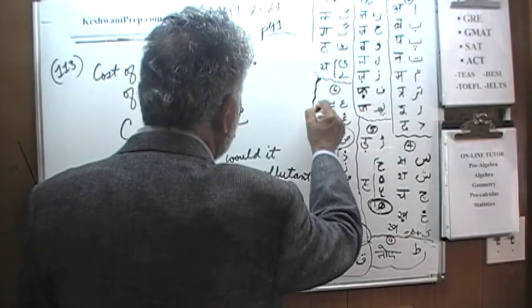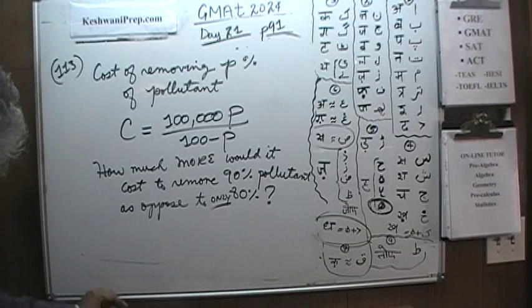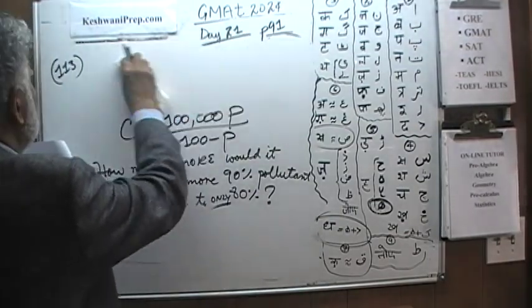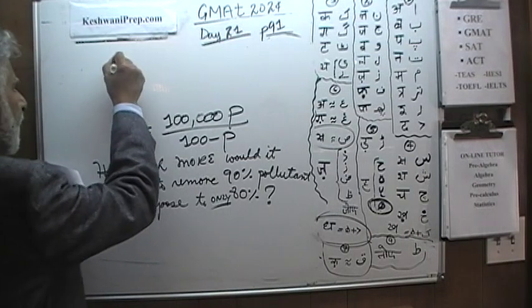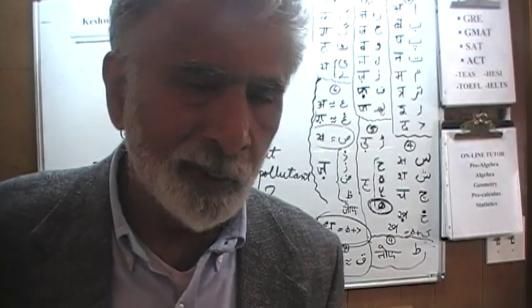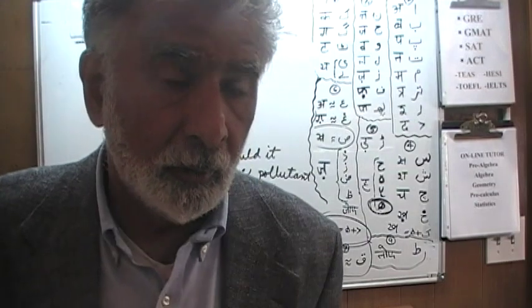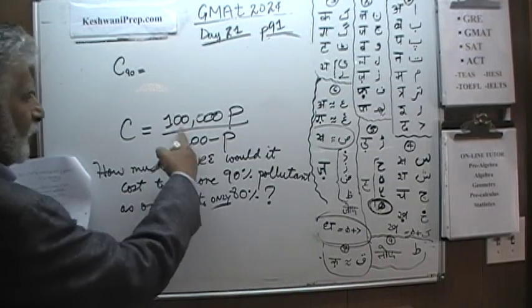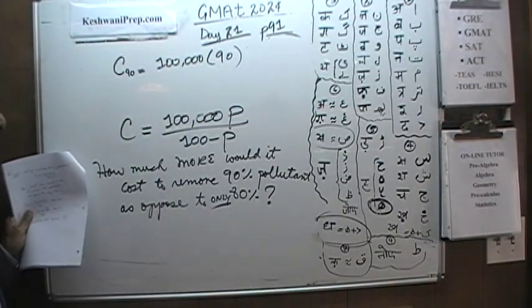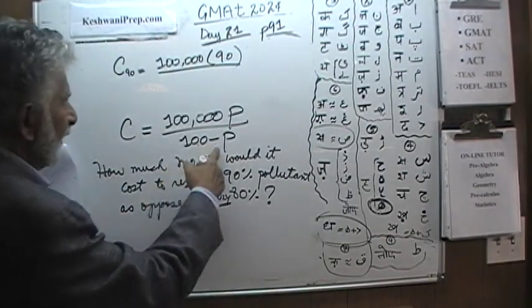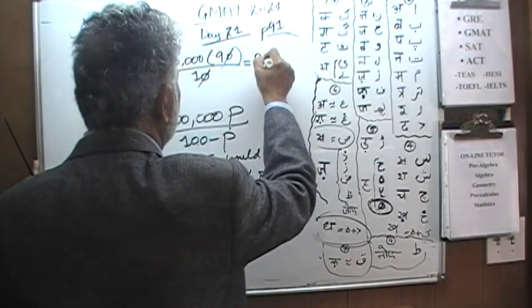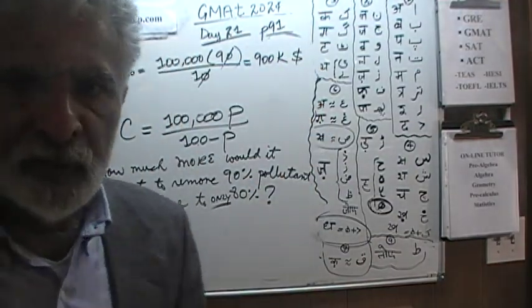There we go. Let's first look at the cost of 90%. So we are going to use this symbol C with a subscript 90. That would mean the cost of removing 90% of the pollutant. And then we will figure out the cost of removing only 80% of the pollutant. And then we will have our answer. The formula is this: 100,000 times P which in our case is 90 because we are removing 90% of the pollutant. And the bottom we have 100 minus 90. 100 minus 90 is 10. So that's quite straightforward. It's just 9 times 100,000 is going to cost us $900,000 if we wanted to remove 90% of the pollutant.